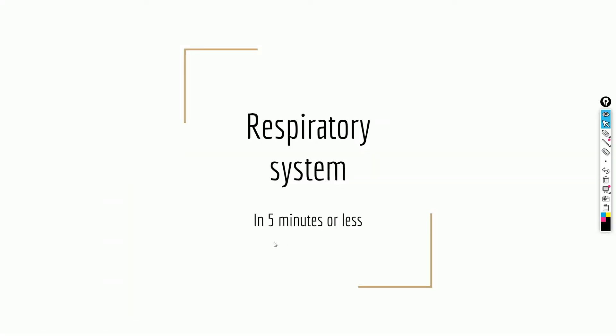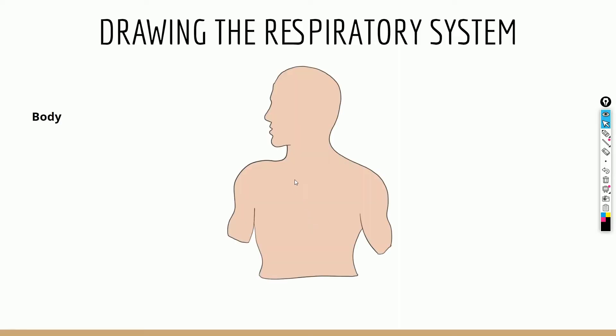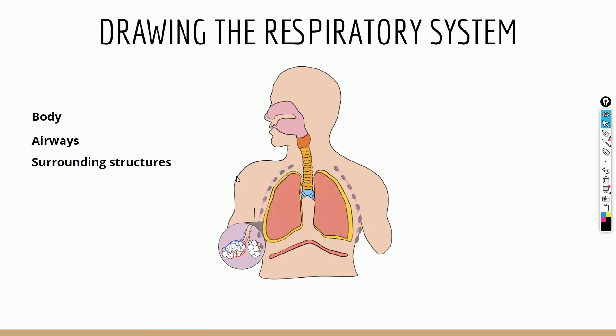Welcome to another video. I'm going to help you memorize the respiratory system in under five minutes. The best approach is to practice drawing it yourself on a blank piece of paper. We'll split it into three parts: drawing the general body, then filling in the airways — the tubes that air passes through — and then the surrounding structures: the lungs, ribs, and diaphragm.